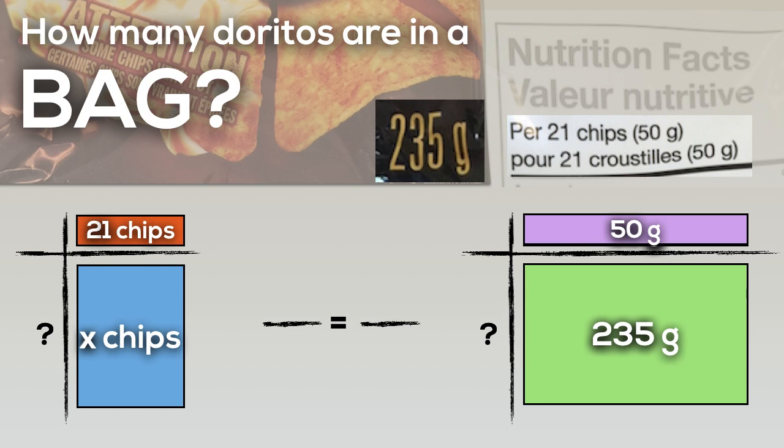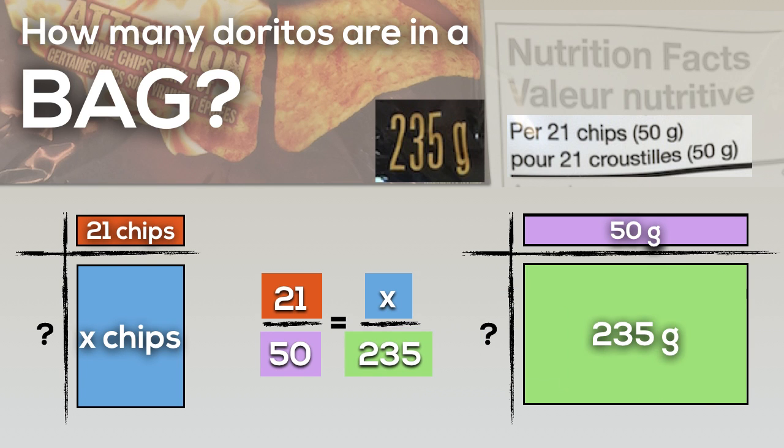We're going to also set up our proportion algebraically by showing our 21 to 50 rate and our X to 235 rate. What we're trying to determine ultimately is how many times bigger 235 is than 50. If we do that by finding our missing factor, working backwards through division, we should be able to at least get a reasonable answer somewhat close.